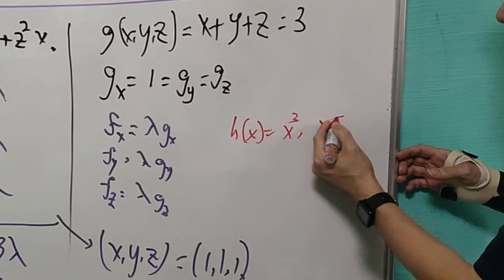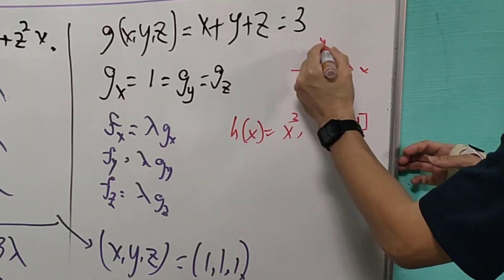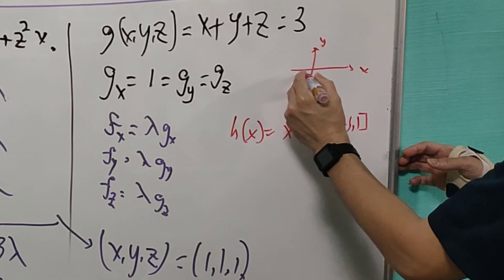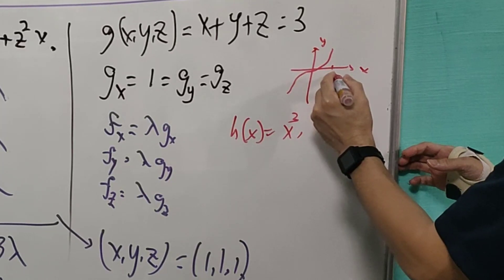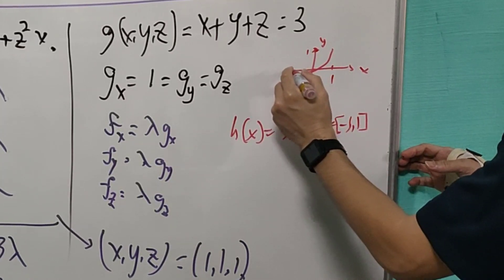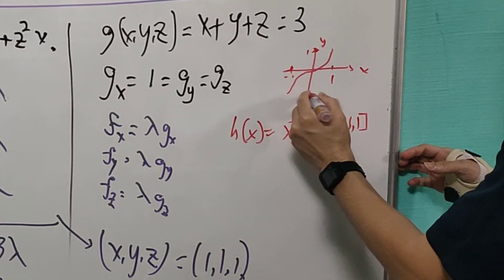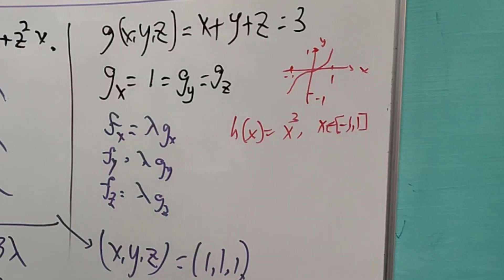From the graph, we know that it will be something like this. When it's 1, then this is 1, negative 1, then it is a negative 1. Okay?